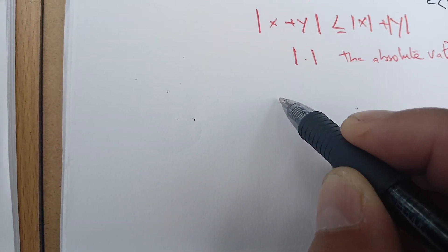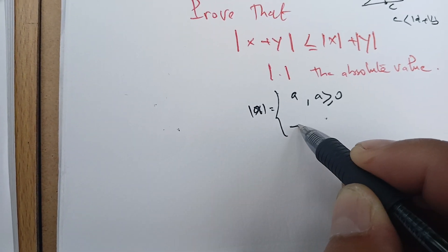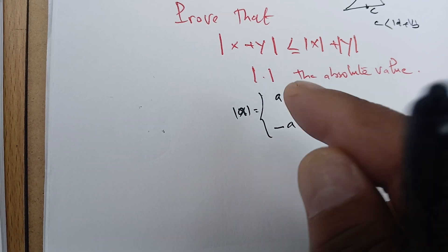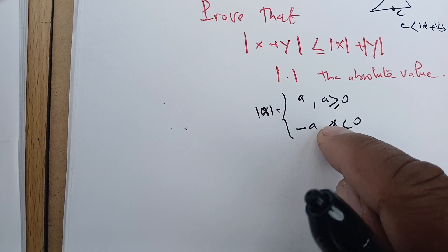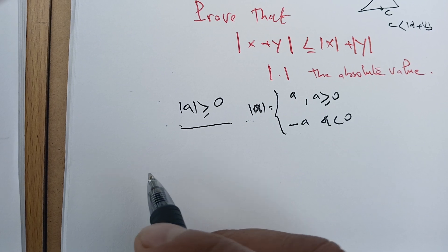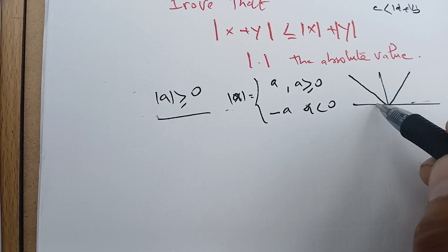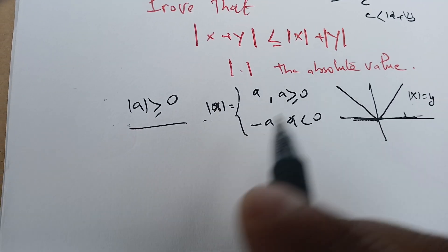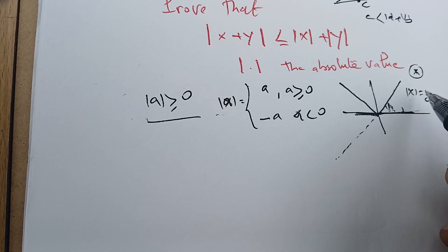To prove this result, remember that the absolute value of a number A is just A if A is bigger than zero, and minus A if A is less than zero. The absolute value is like a machine that makes the number positive. If it's positive, it leaves it; if it's negative, it applies a minus sign. Therefore the absolute value is always bigger than zero. We can see this graphically: the graph of the absolute value of x is always on top of the x-axis.